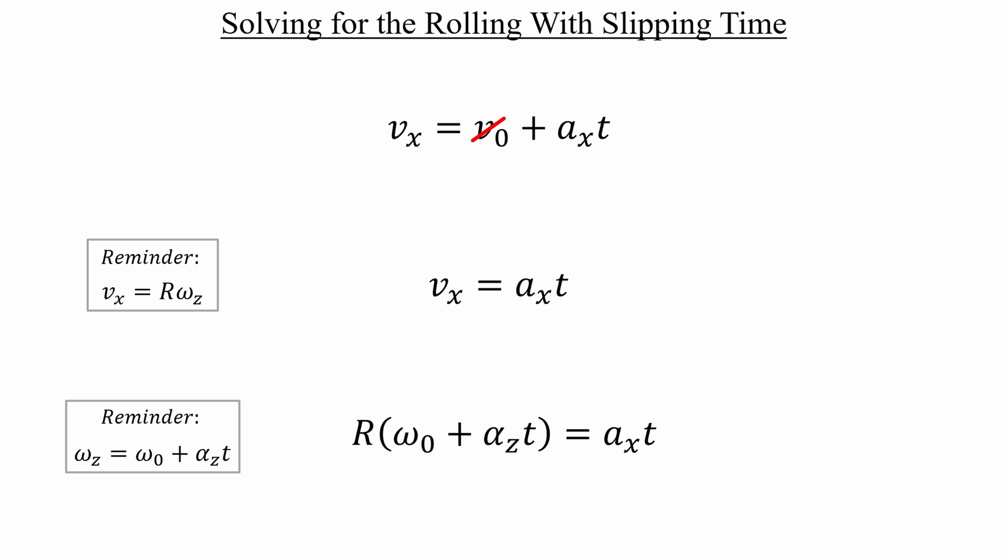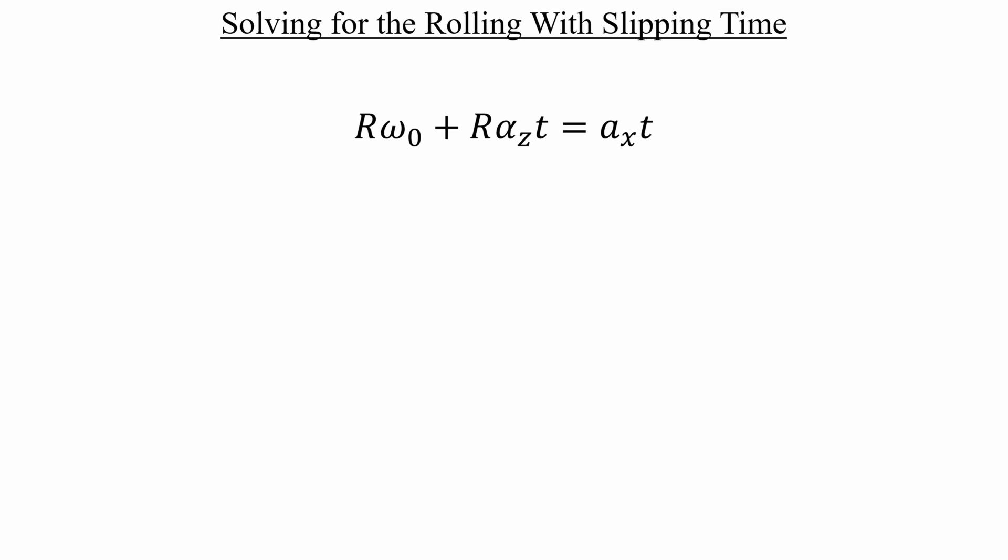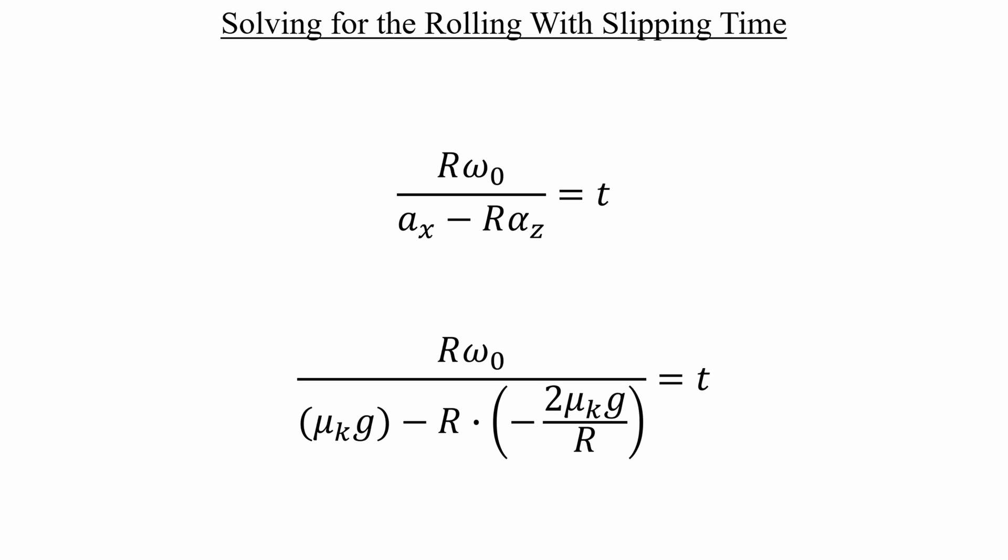I'll start the process by distributing r into the parentheses, and then slide the second term on the left over to the other side. If we factor out the time, and then divide both sides by the difference inside the parentheses, our next step is to use the equations for the linear and angular accelerations from part A. The r's in the denominator will cancel out, and the same goes for the negative signs as well. This gives us two positive terms downstairs that can be added together. And the result is our rolling with slipping time that we needed.